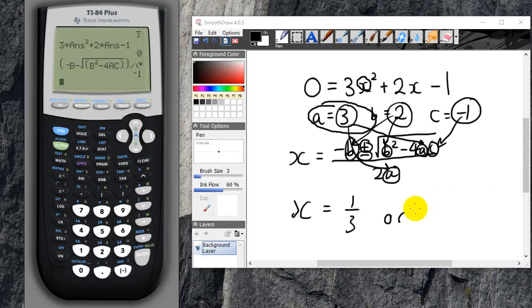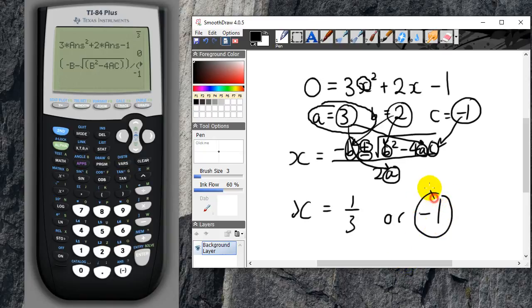So the answer is 1 over 3 or negative 1. And you can simply substitute this number back into here in your head. So that'll be 3 plus negative 2, which is 1. 1 minus 1 is 0, so yep, it does work.